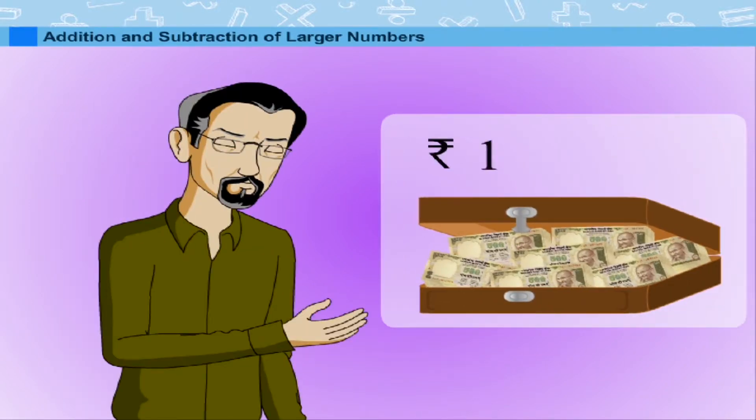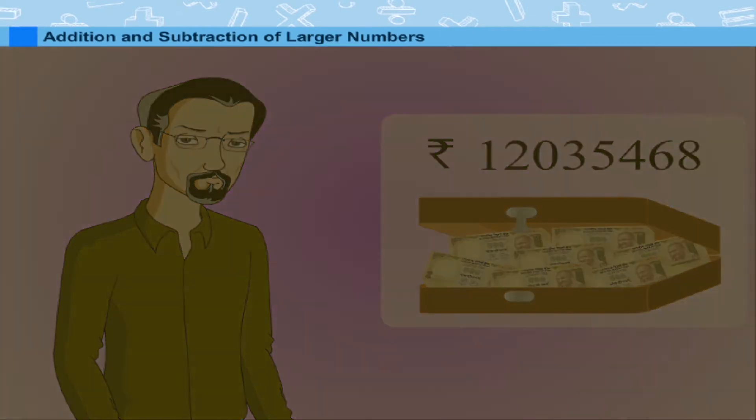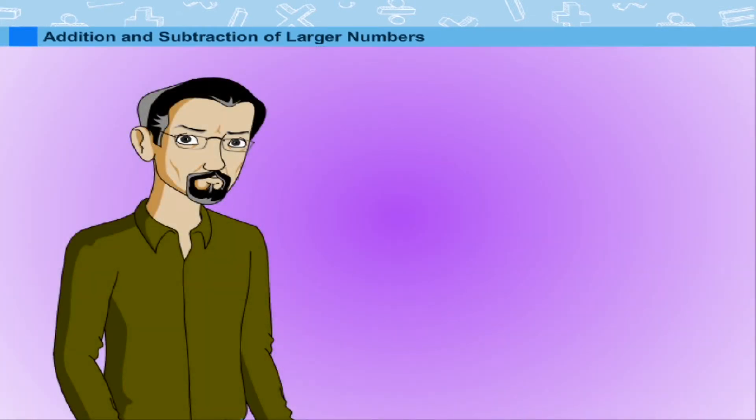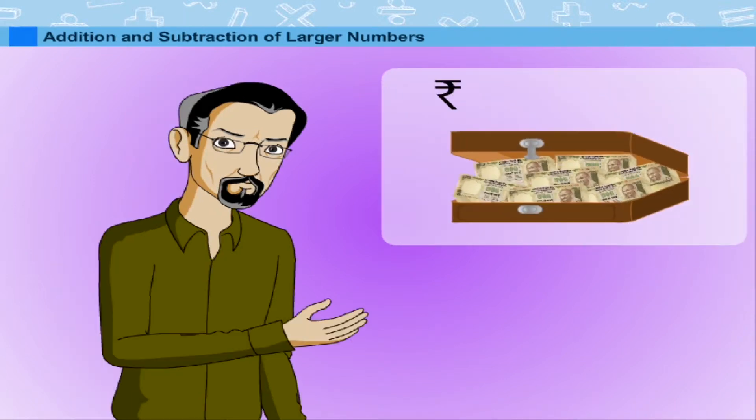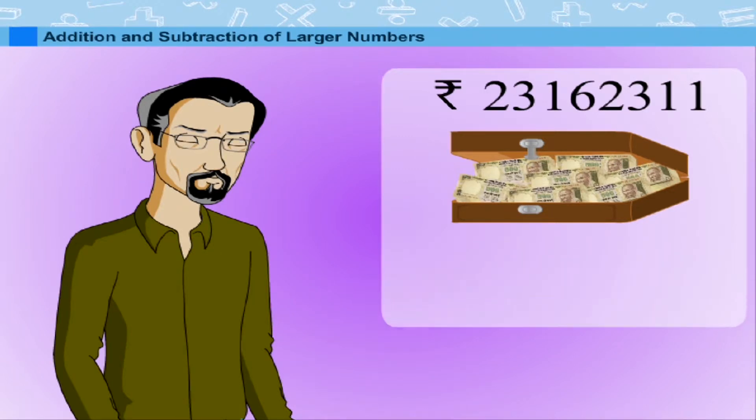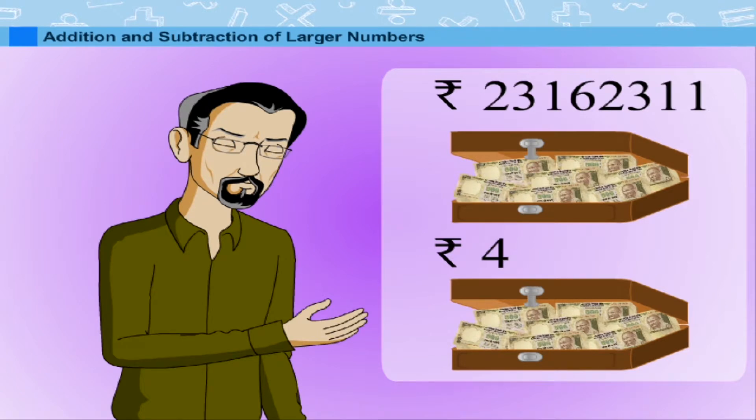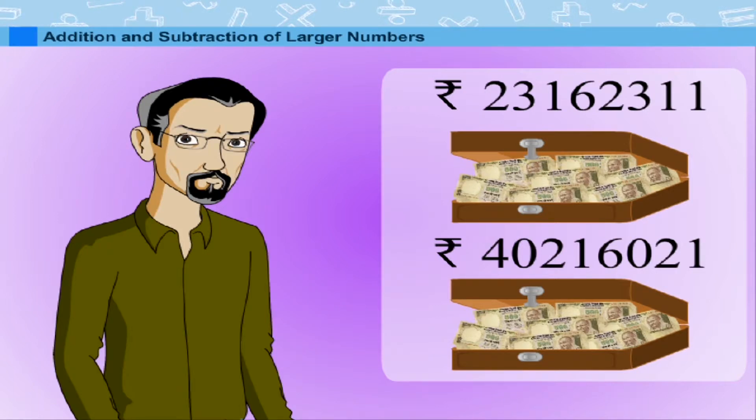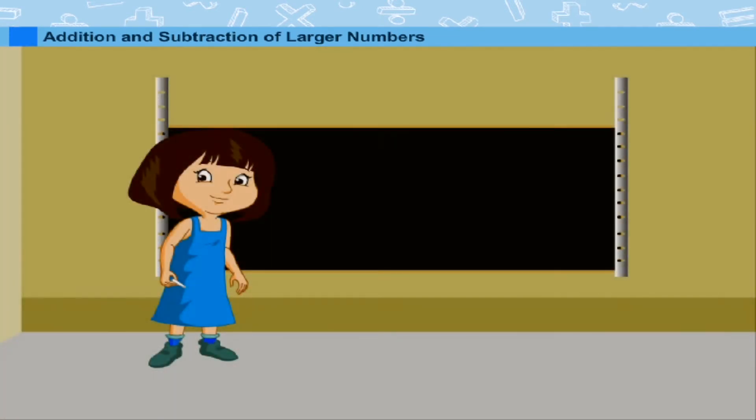Addition and subtraction of larger numbers. Uncle Raj got 1 crore 20 lakhs 35,468 rupees on his retirement day. He later sold another house for 2 crores 31 lakhs 62,311 rupees. He also added his savings of 4 crores 2 lakhs 16,021 rupees to it and deposited the amount in the bank.